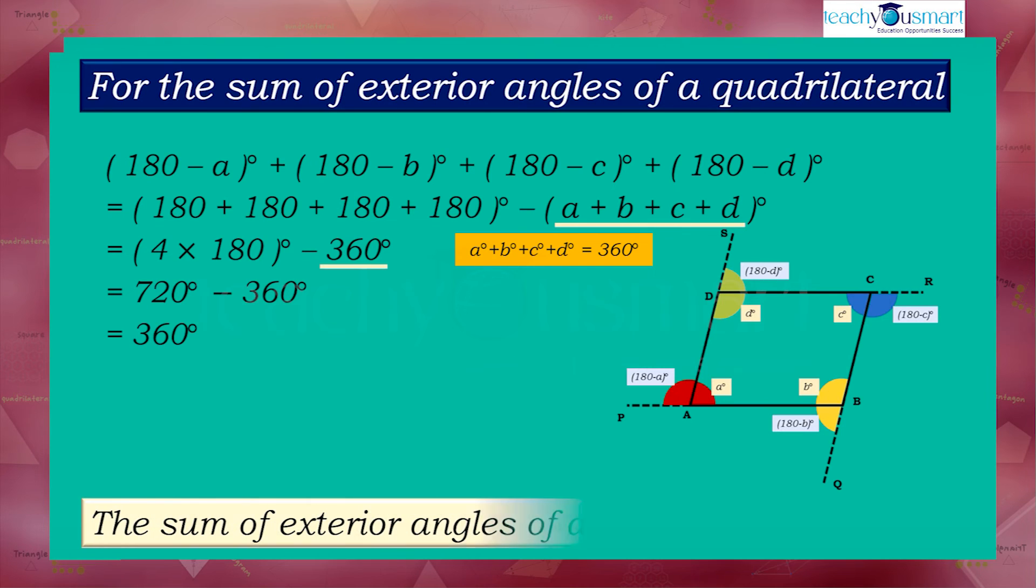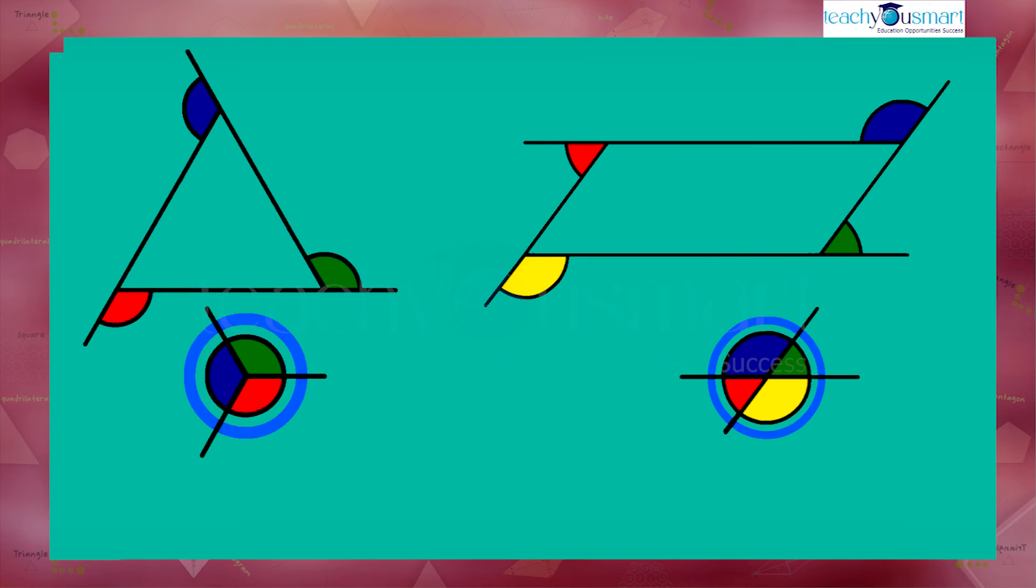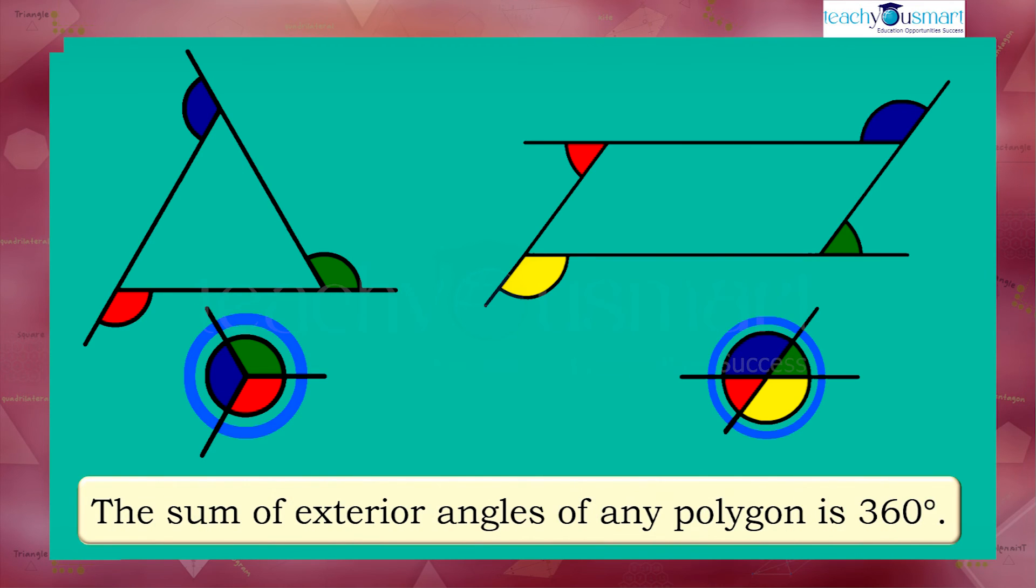The sum of exterior angles of a quadrilateral is 360 degrees.